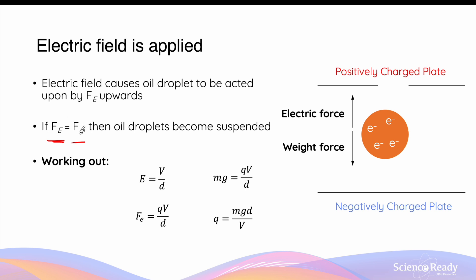When these two forces are equal, the oil droplets will experience a net force of zero and therefore become suspended in the bottom chamber without falling any further. The strength of the electric field is given by the voltage between the two plates divided by the distance between them, and therefore the magnitude of the force due to the electric field is given by QV divided by D. When the weight force equals the magnitude of the electric force, Mg is equal to QV over D. By rearranging this equation, we can make the charge of the oil droplet the subject: Q equals Mg times D divided by V.